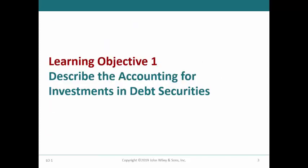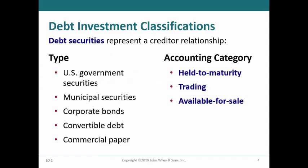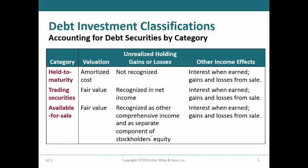In the first learning objective, we will describe the accounting for investments in debt securities. There are many different types of debt securities that companies can invest in, as shown on this slide. Some of these securities are issued by federal, state, and local governments, and others are issued by corporations. The accounting for investments in debt securities depends on the intention that management has regarding the length of time they expect to hold the securities. There are three categories: investments held to maturity, trading, and available for sale. There are two different methods of valuing the debt securities: amortized cost and fair value.